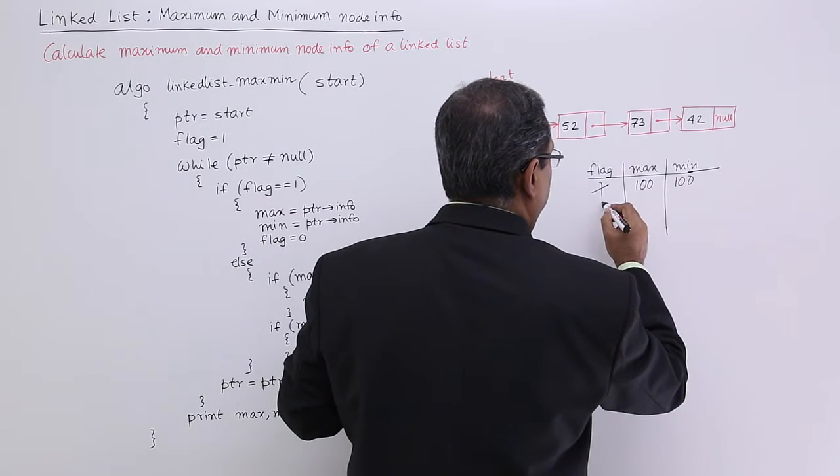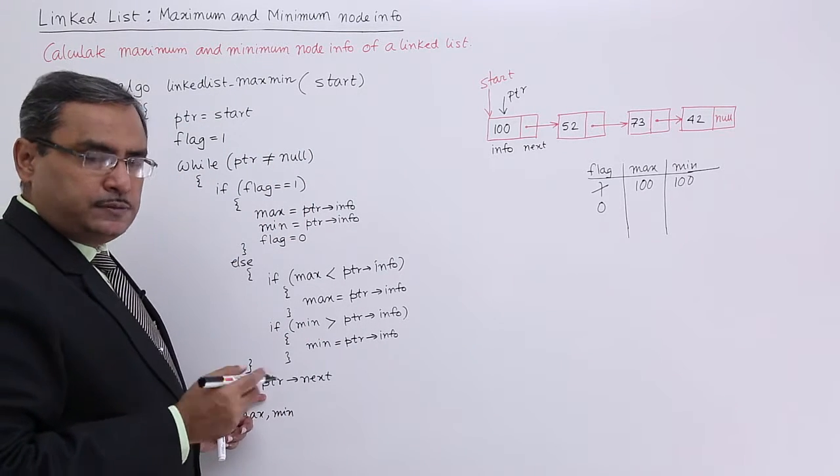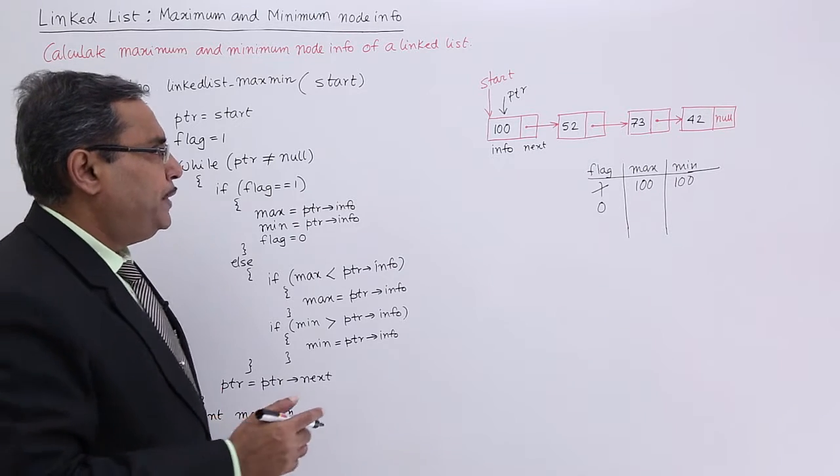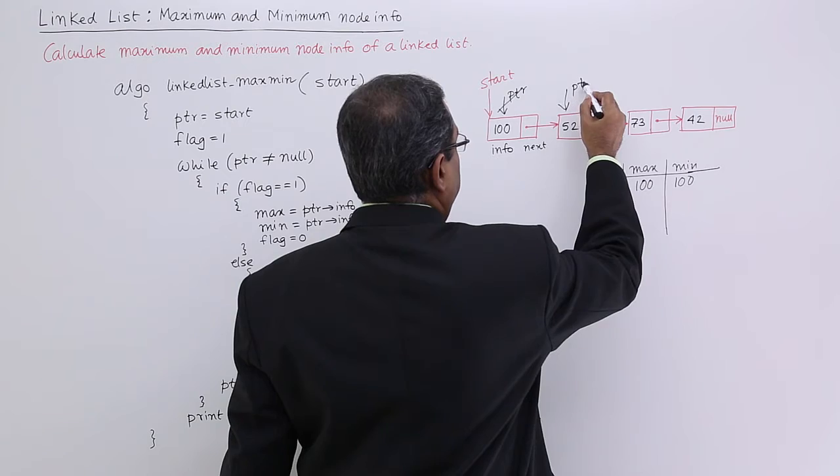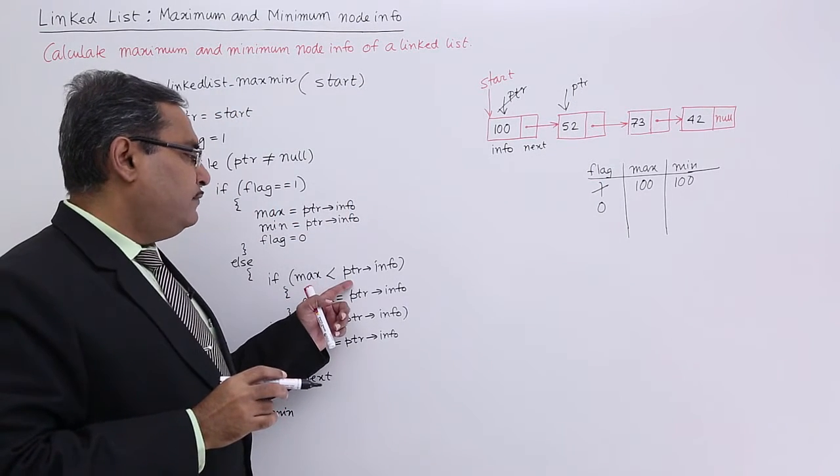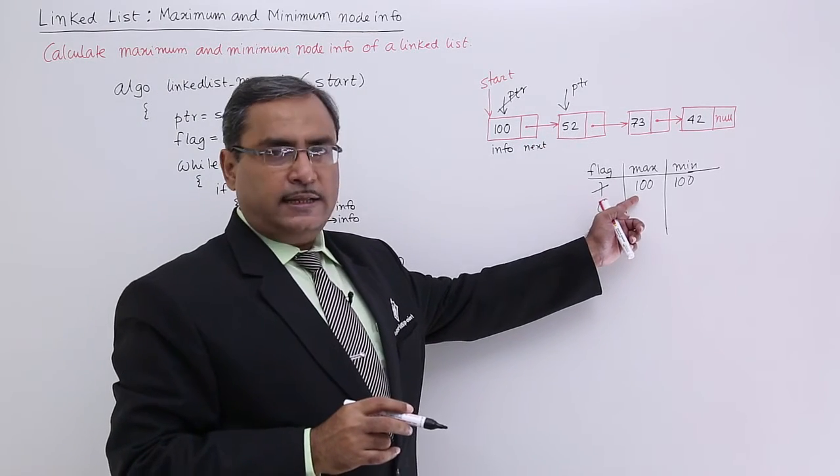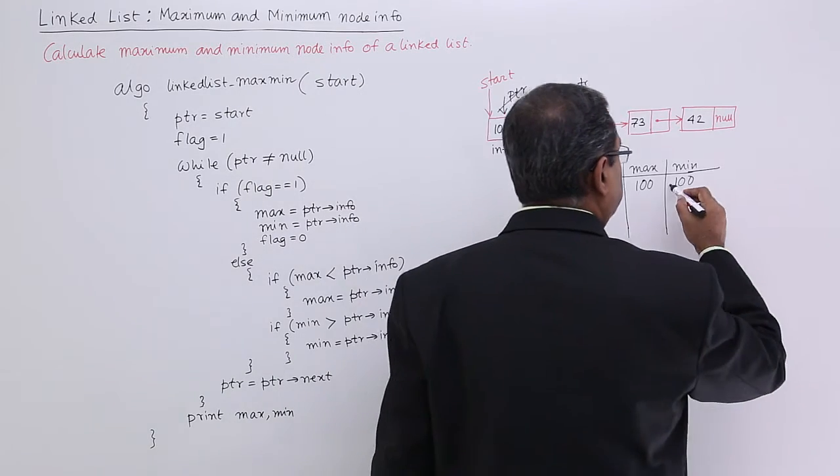Flag will be made equal to zero, so it will come out, and ptr = ptr->next will get executed. Now it is checking whether max is less than ptr->info or not—no, ptr->info is 52, max is greater than that. But min is greater than 52, so that is why min requires updation.